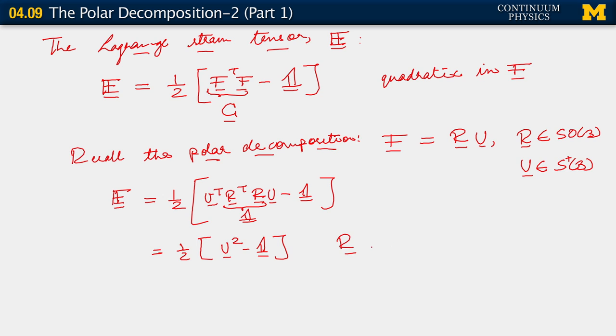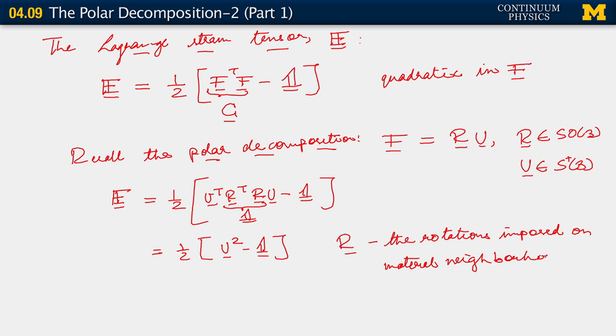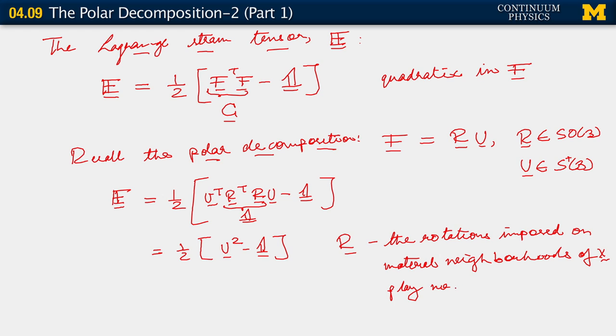What this implies is that the rotations imposed on material neighborhoods of x play no role in E. We have a neighborhood around a reference position x, and that neighborhood fundamentally does undergo a rotation under the deformation, but that effect of the rotation has been mathematically exactly cancelled out in our definition of the strain.